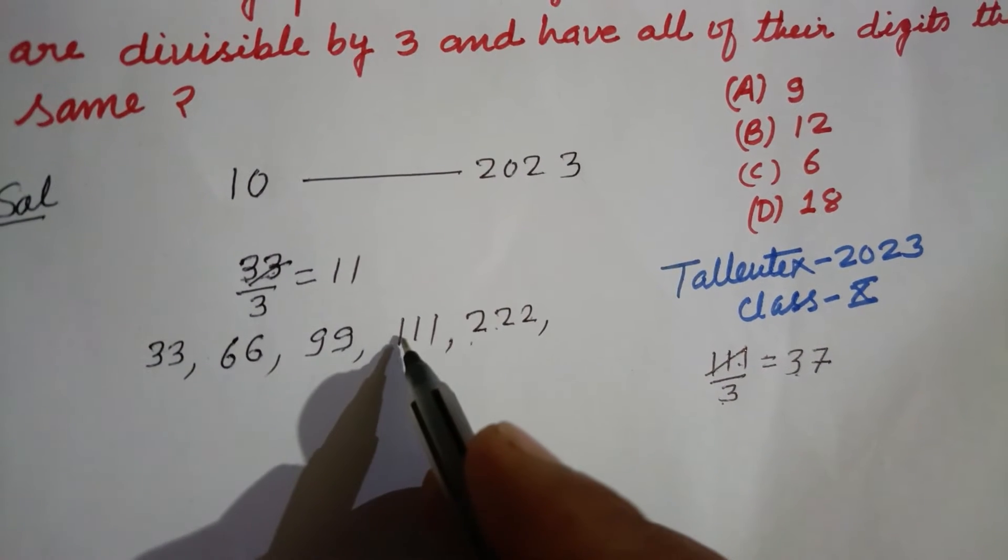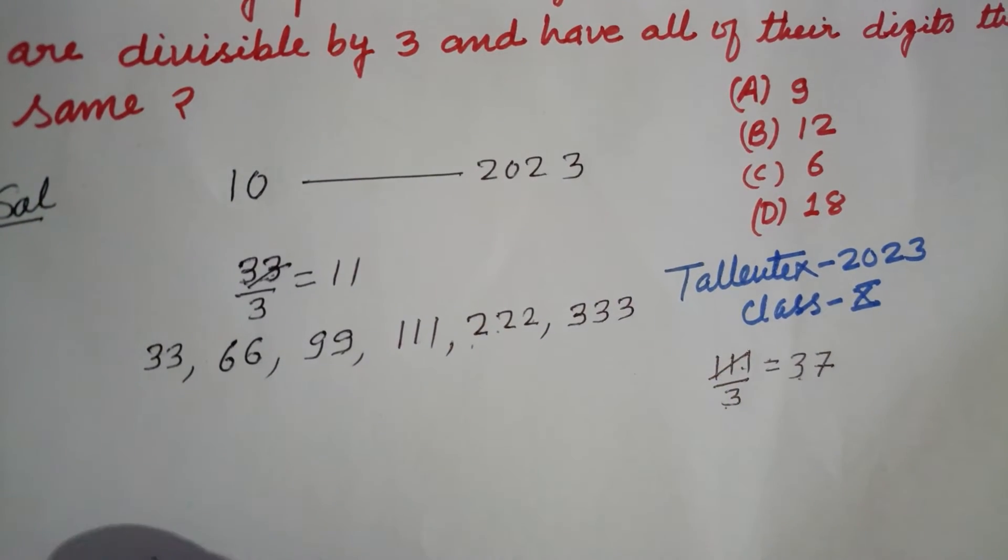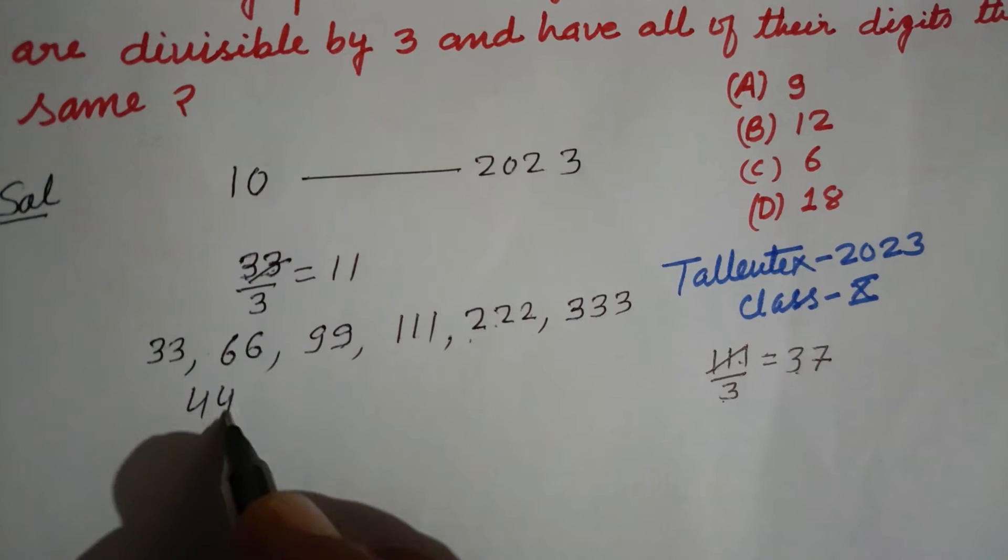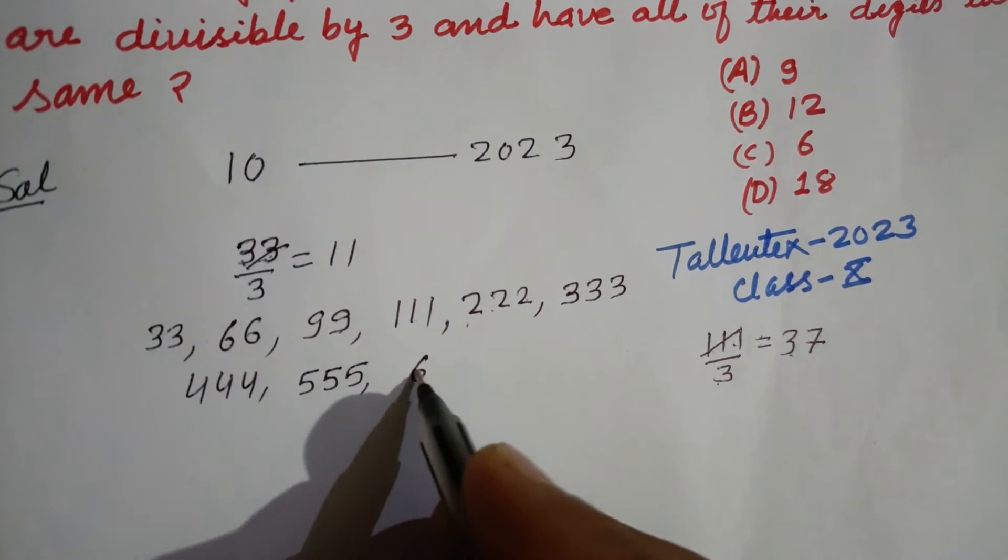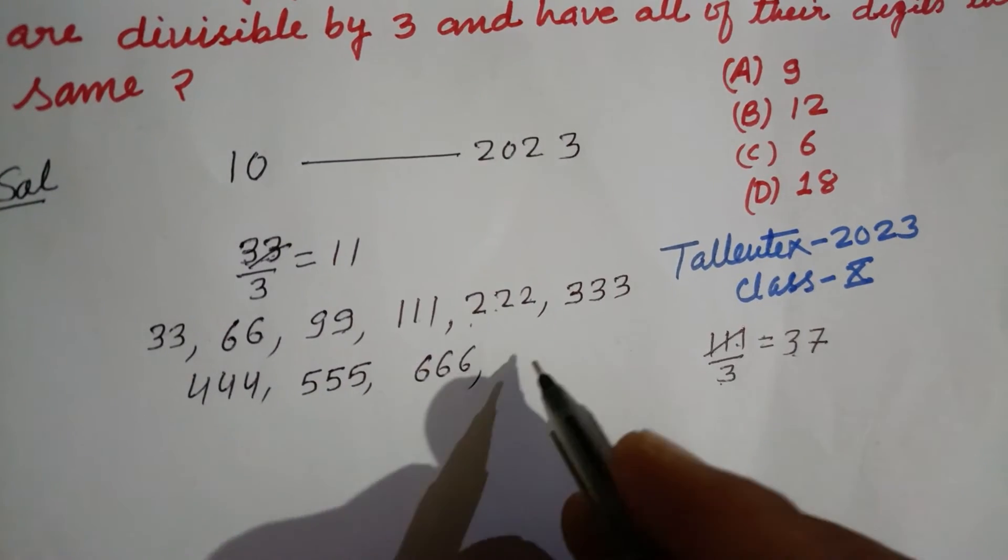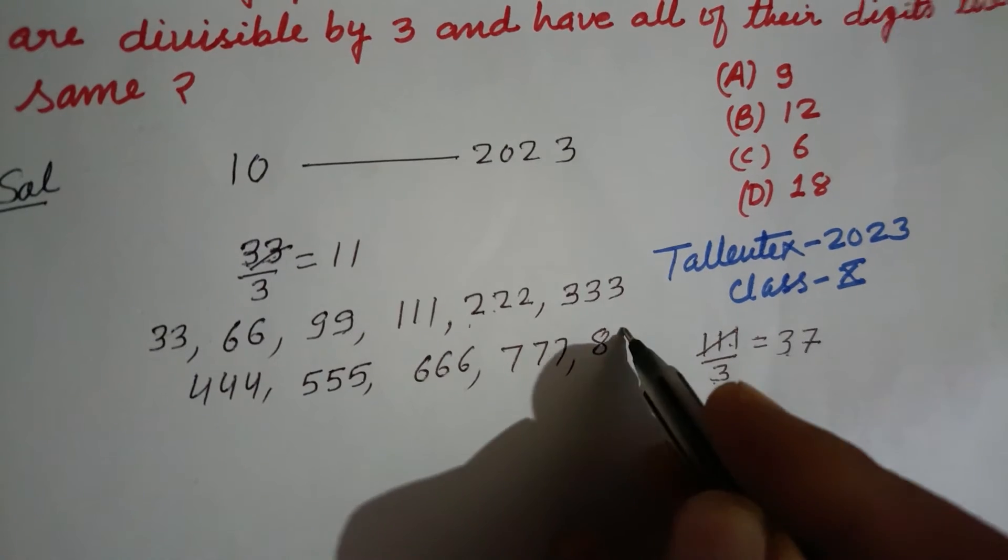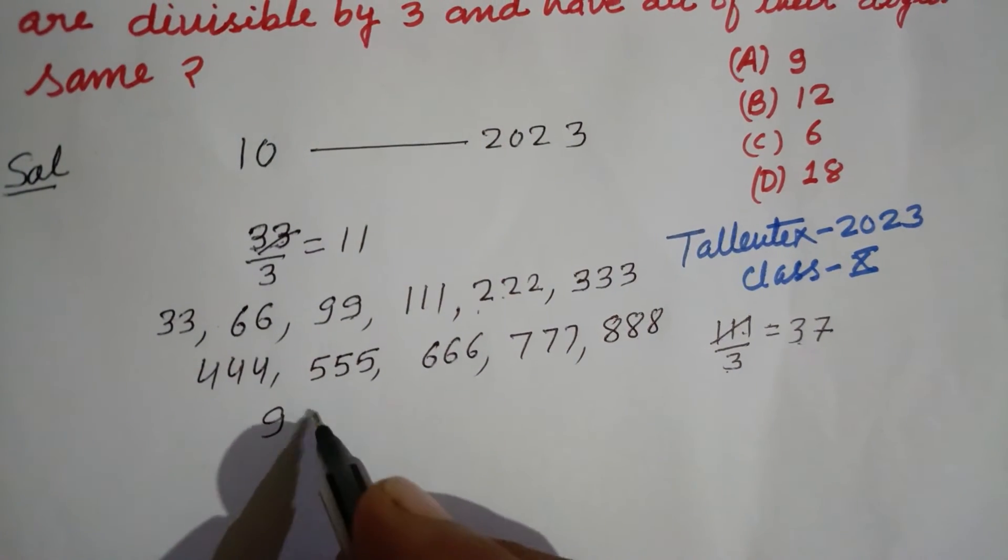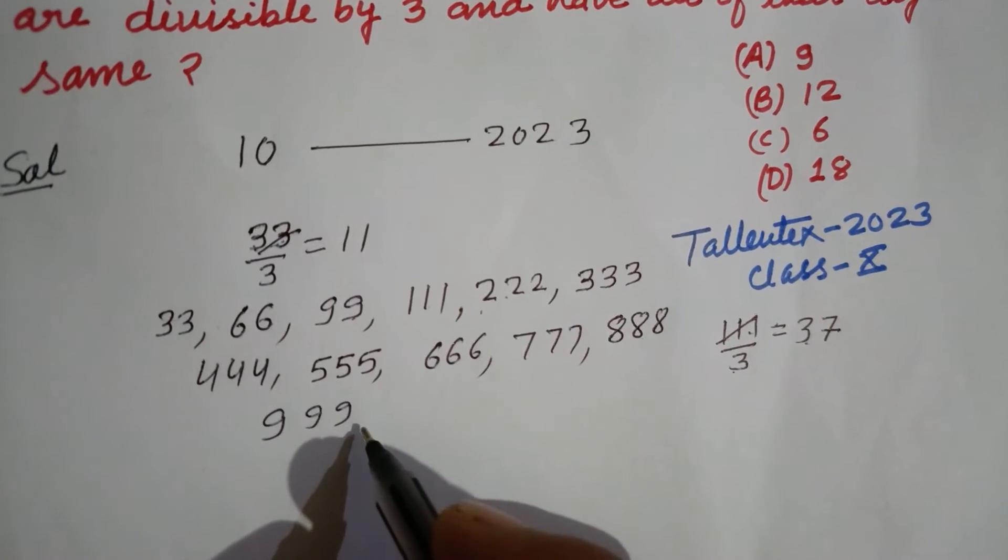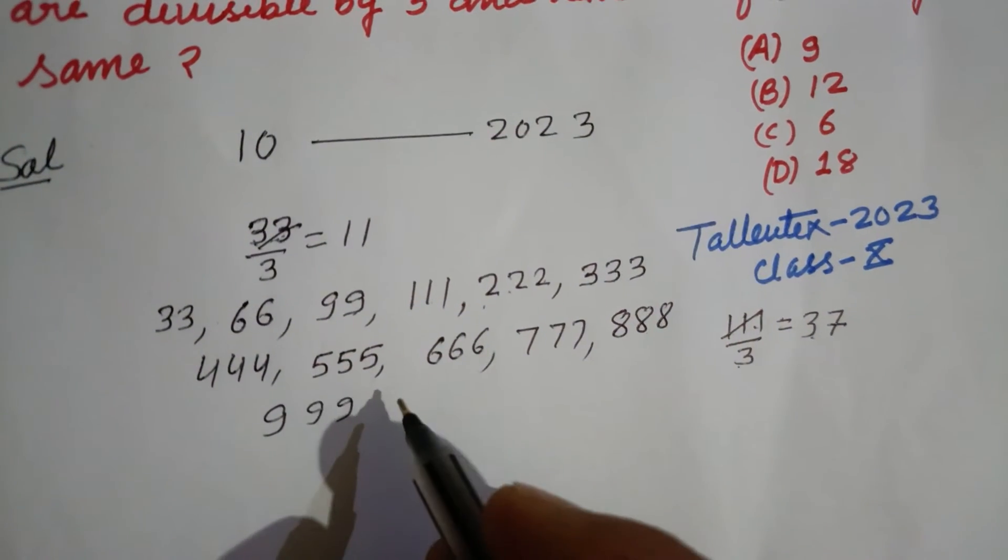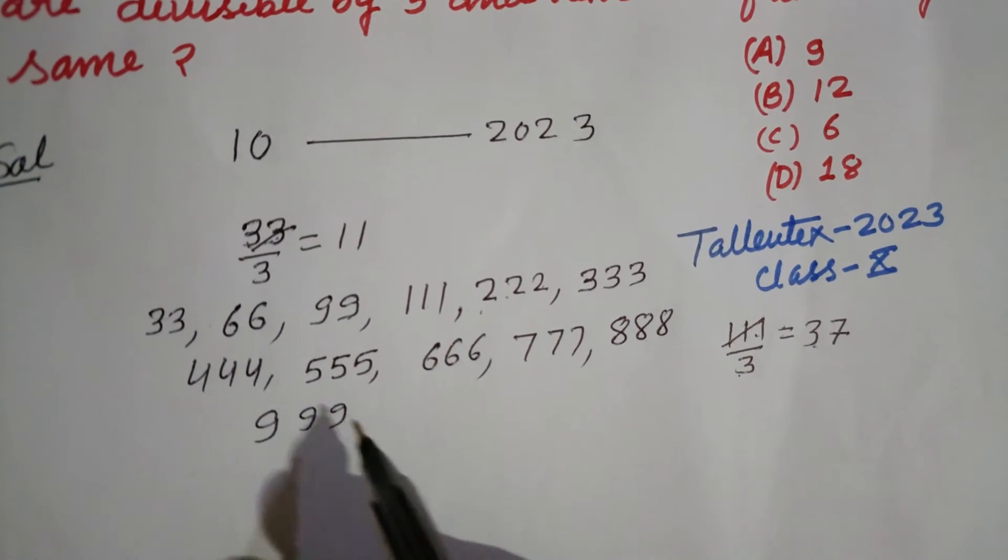333 is also divisible, 444 also divisible, 555 also divisible, 666 also divisible, 777 also divisible, 888 also divisible, and 999 also divisible. So these are the numbers which are divisible by 3 and have the same digit.